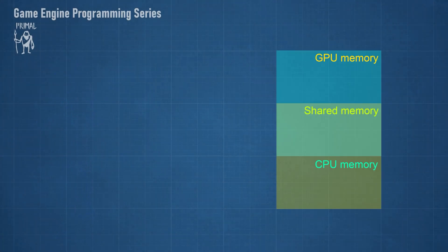In general, a system with a discrete graphics adapter has three memory types. Most if not all GPUs have dedicated GPU memory that's only accessible by the GPU. Often there is some memory shared between the CPU and GPU — this can be memory on the GPU or the system memory. Some systems with integrated GPUs have only shared memory and system memory.